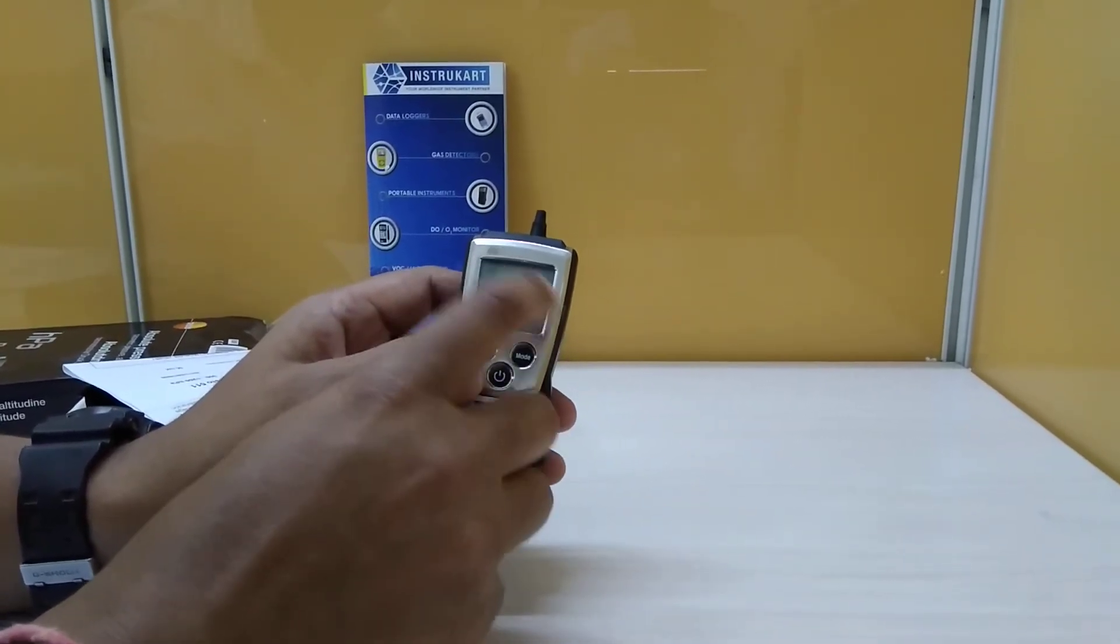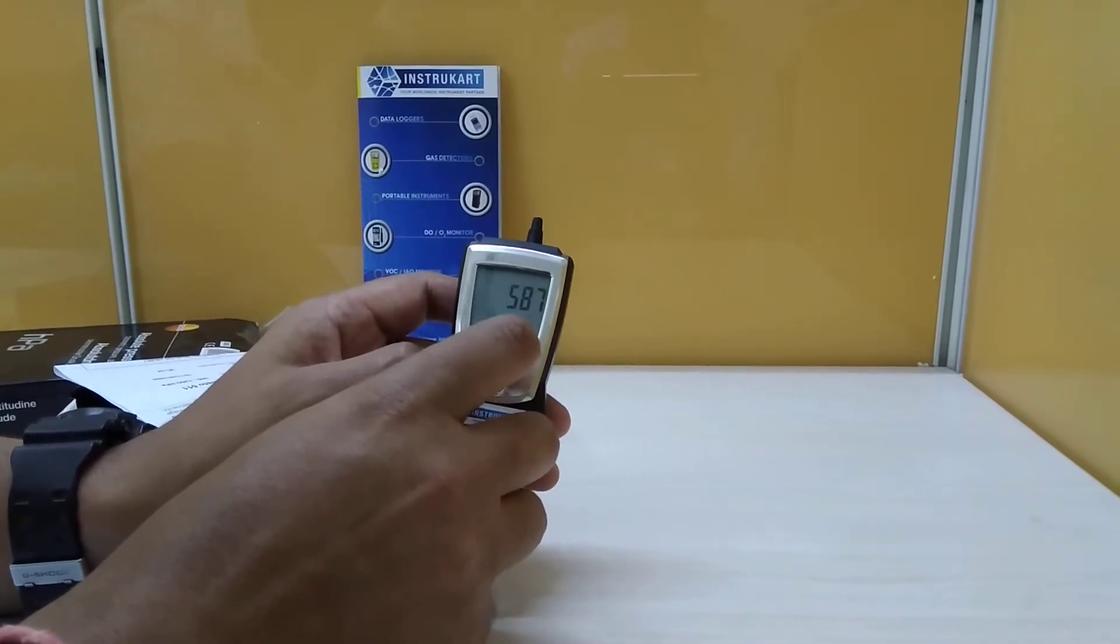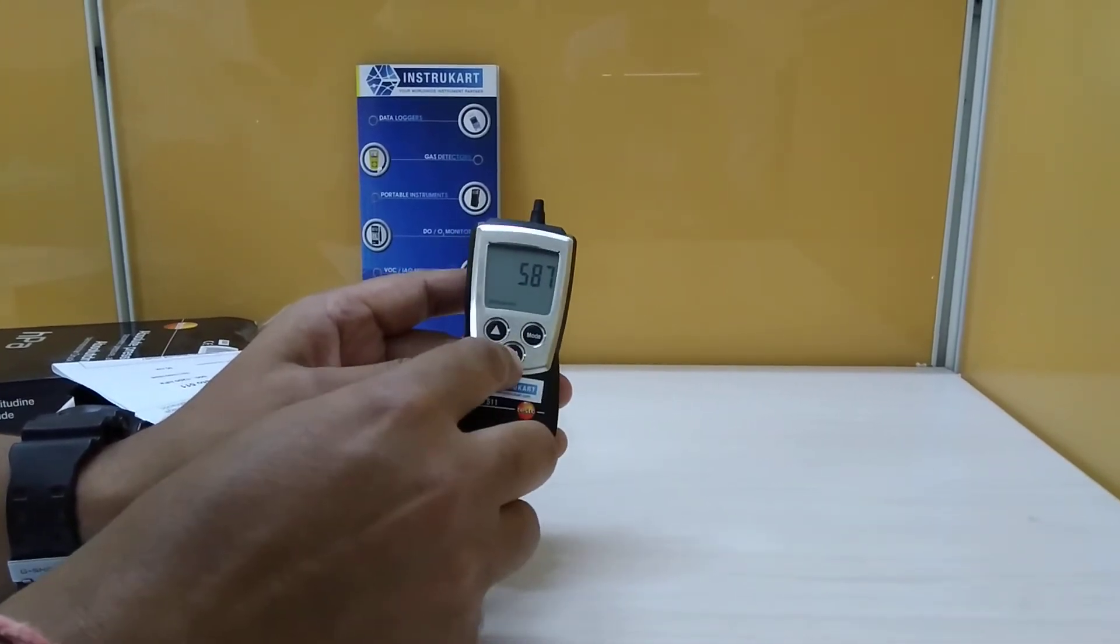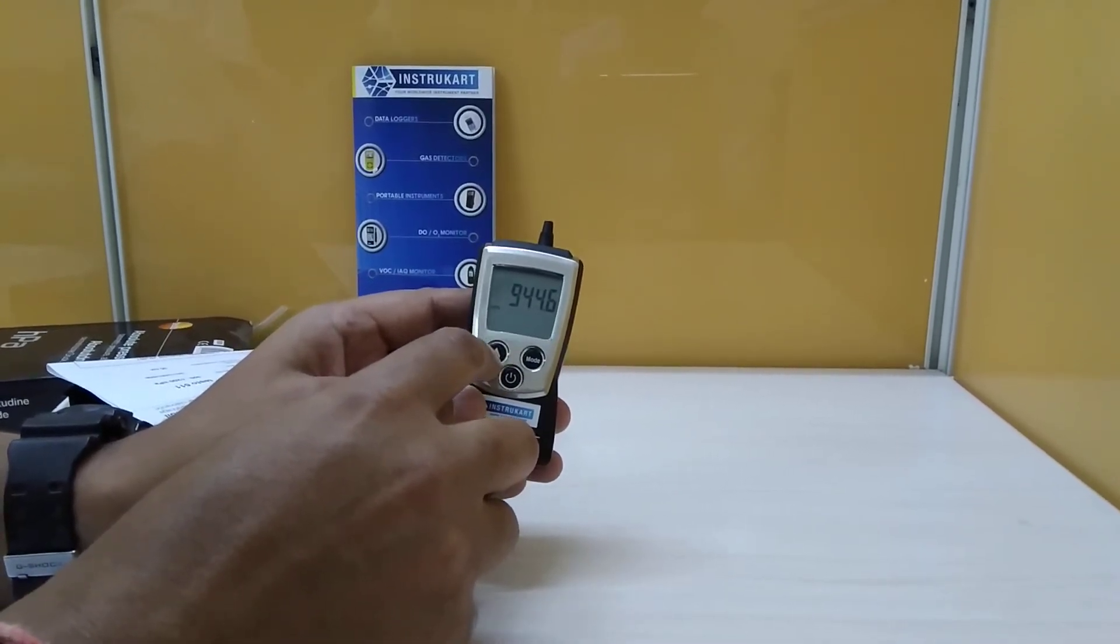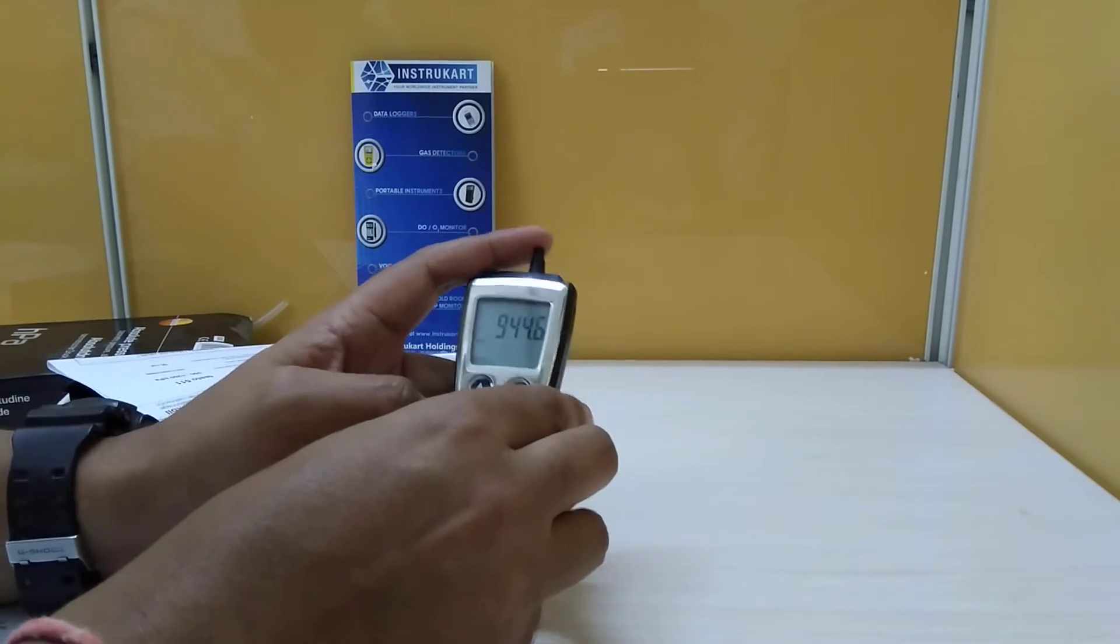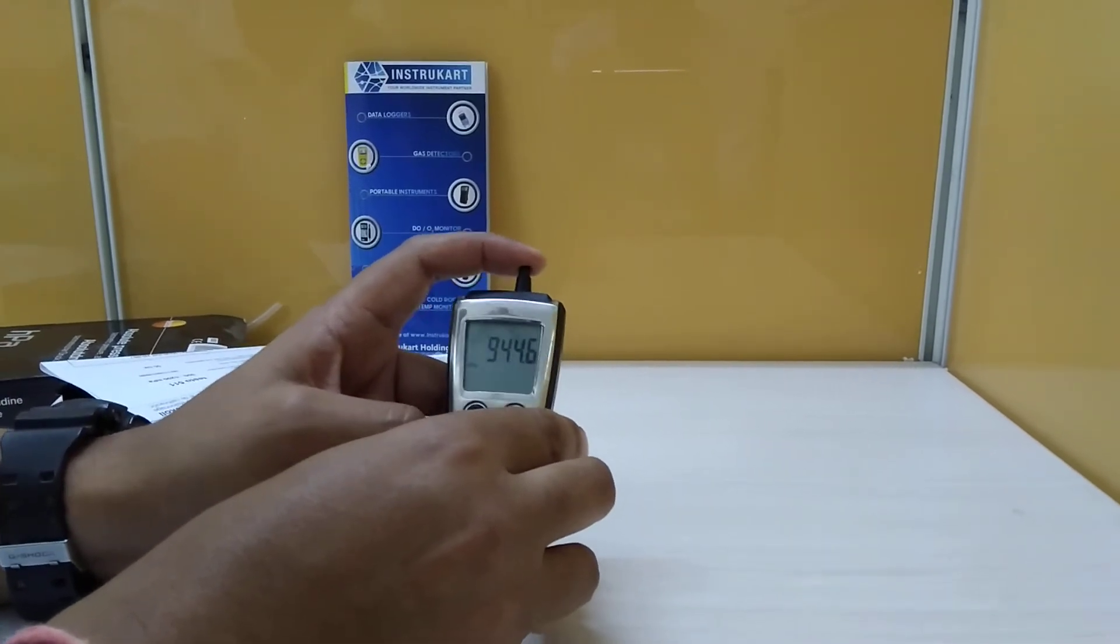The last button is the power on/off. When you click this button again, you go back to the current barometric pressure.